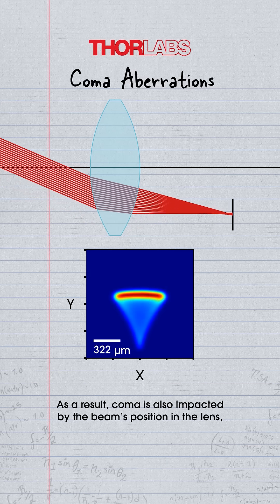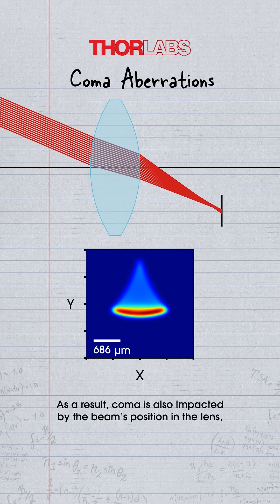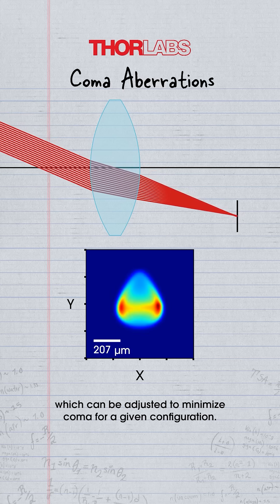As a result, coma is also impacted by the beam's position in the lens, which can be adjusted to minimize coma for a given configuration.